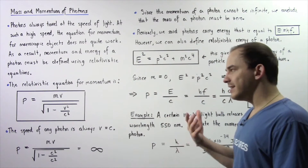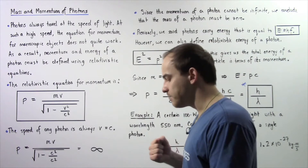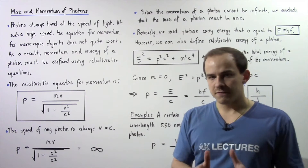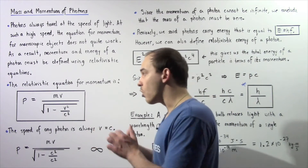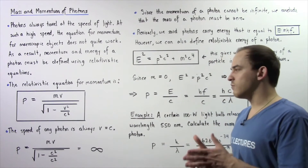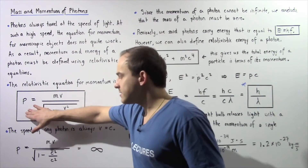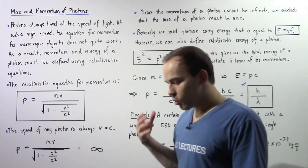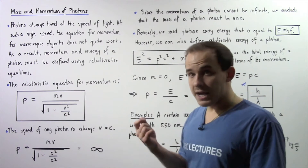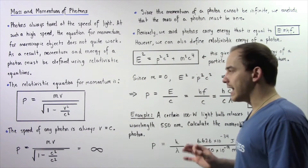What exactly is a relativistic equation, and where does it come from? It comes from the special theory of relativity. We'll derive and discuss this equation more when we cover the theory of relativity. For now, it's sufficient to say that this equation gives us the momentum of a particle traveling at a very high speed, close to the speed of light.